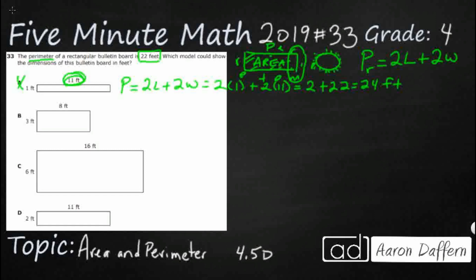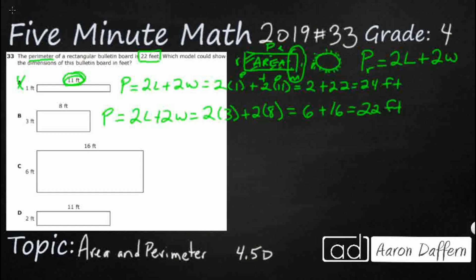So we'll just keep going until we find our answer. The perimeter is double the length plus double the width. So let's double three, and then let's double eight. Two times three equals six, and two times eight equals 16. Six plus 16 — looking pretty good. I'm thinking that's going to be it.